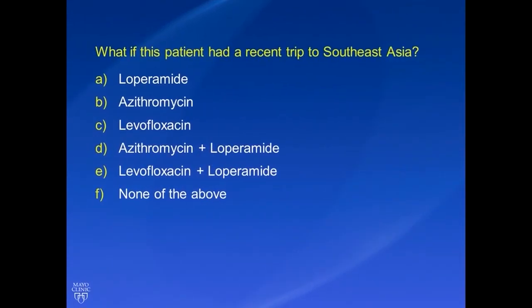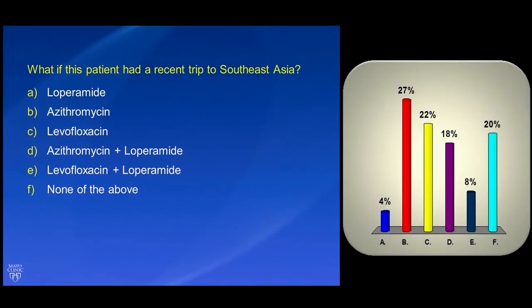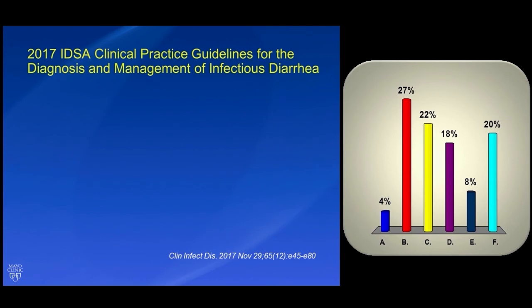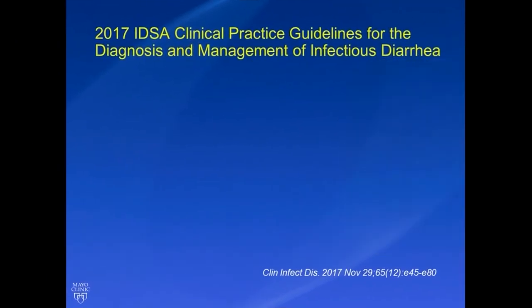Now the same case, except he was in Southeast Asia — so now he has a history of recent travel. Same choices: would you change your mind, and to what? There's no clean statistical term to describe this distribution, but let's see what we can learn.